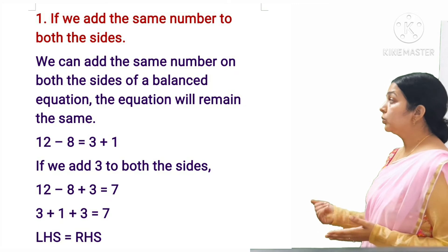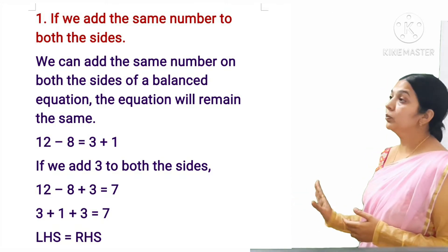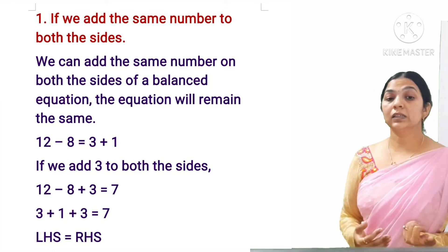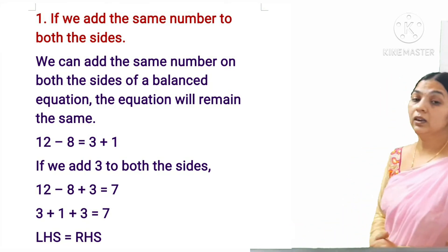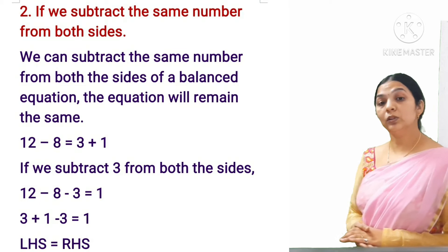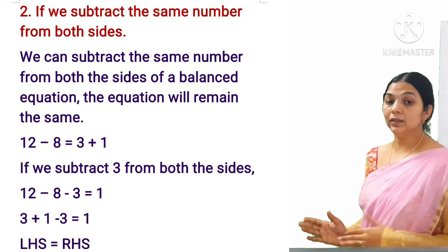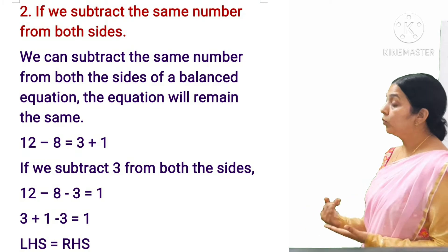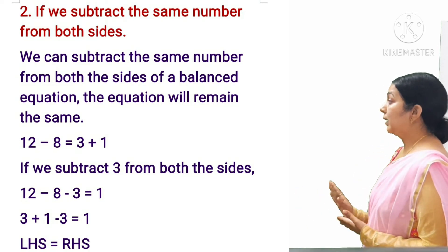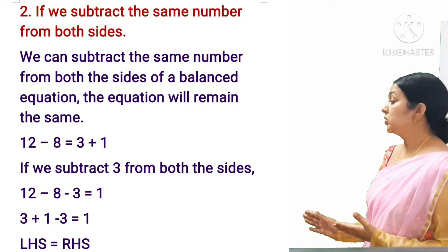For example, 12 − 8 = 3 + 1. If we add 3 to both sides: 12 − 8 + 3 = 3 + 1 + 3, that is 7 = 7 — LHS and RHS remain equal. Similarly, if we subtract the same number from both sides, the equation remains balanced. Subtracting 3 from both sides: 12 − 8 − 3 = 4 − 3, and the equation still holds.